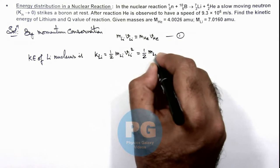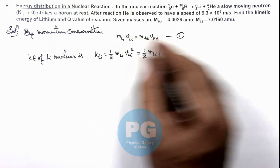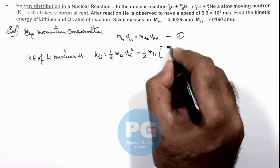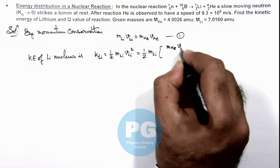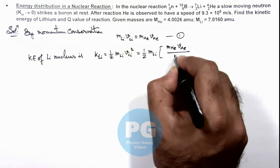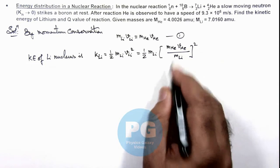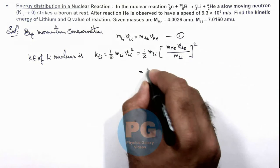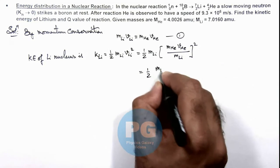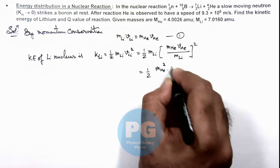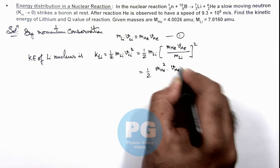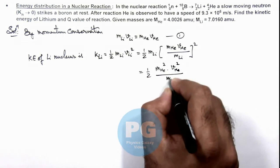mass of lithium multiplied by v_Li as (m_He v_He) / m_Li, whole squared. So here this gives us ½ (m_He² v_He²) / m_Li.